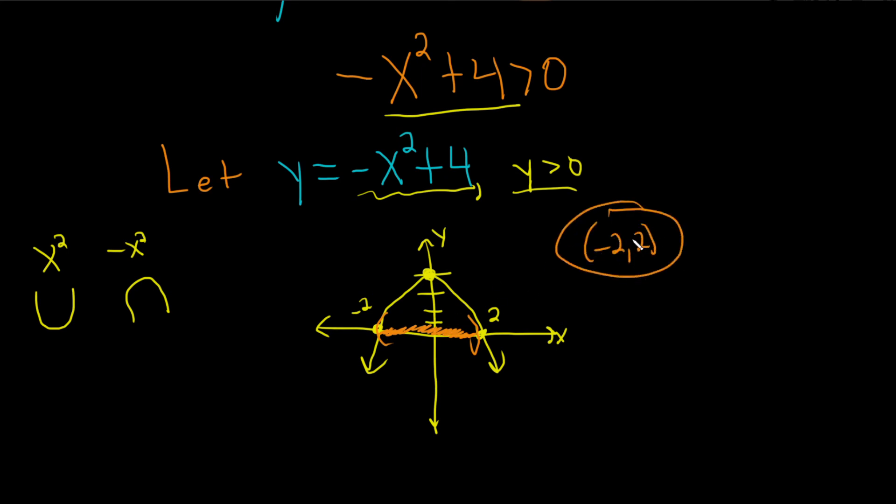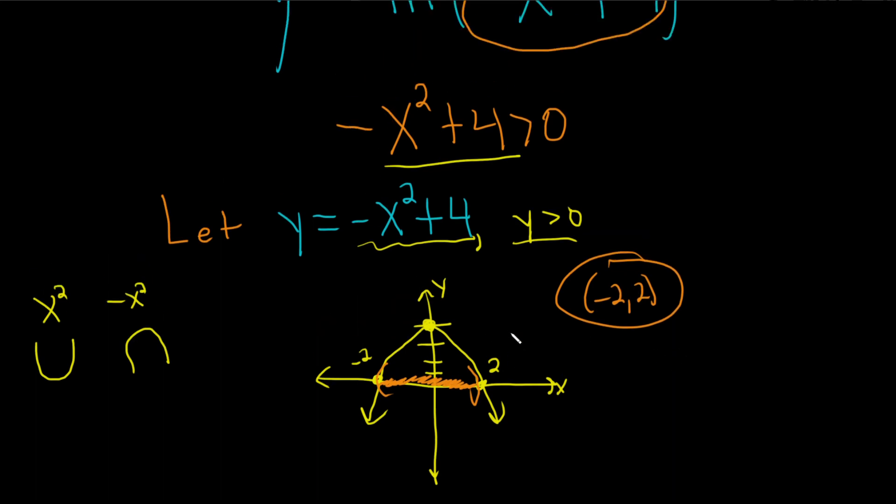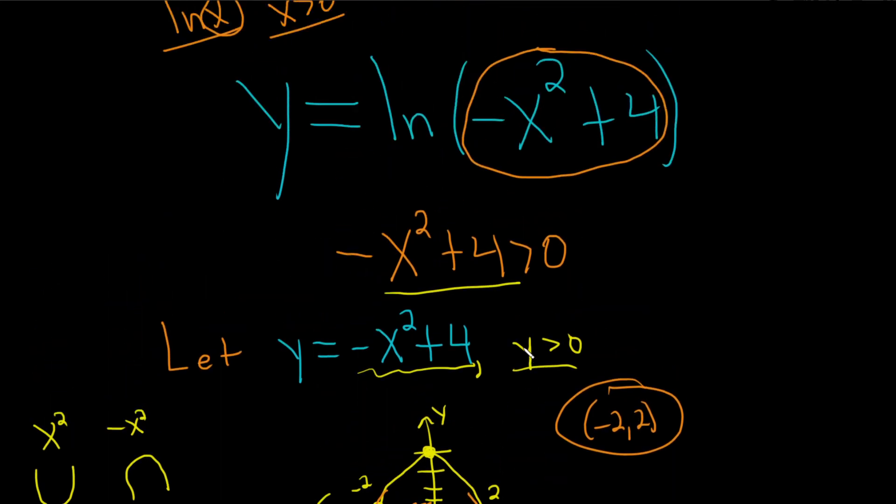Really cool because this is not the graph of the original function. This is the original function, right? So we started off by looking for the domain. Step 1 is you just always take whatever is here and you set it greater than 0. Then we said, okay, we have to solve this inequality. Let's do it the cool way. Let's do it graphically. So we called it y.